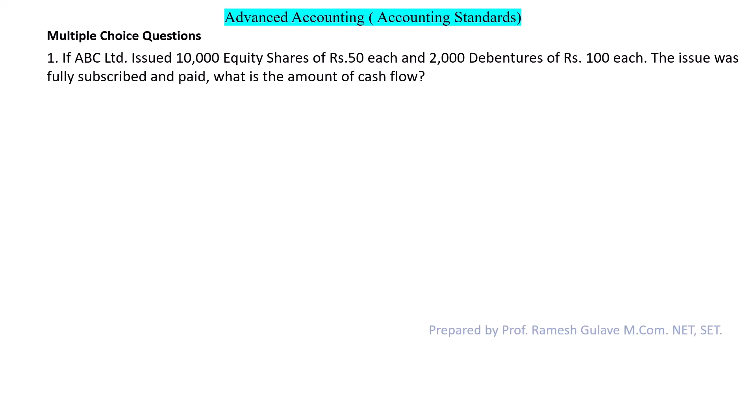First question: ABC Limited issued 10,000 equity shares of Rs 50 each and 2,000 debentures of Rs 100 each. The issue was fully subscribed and paid. What is the amount of cash flow? This is an inflow of cash, and this question is based on Accounting Standard 3, that is the Cash Flow Statement.